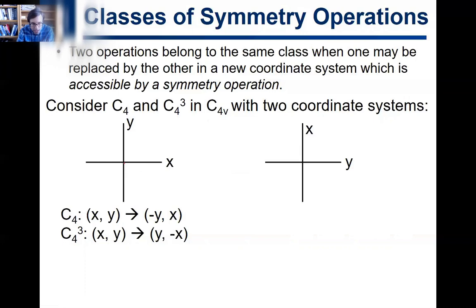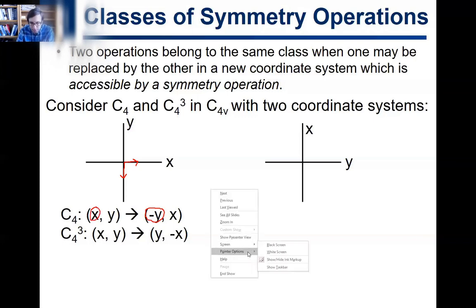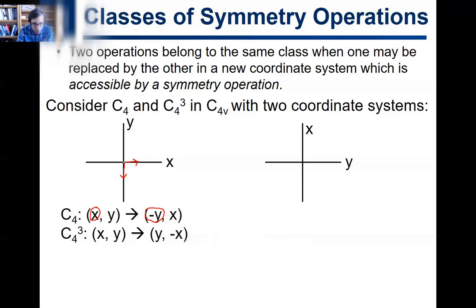To be really clear: the X vector spun 90 degrees goes into negative-Y, and the Y vector spun 90 degrees goes into X. So under C4: X → −Y and Y → X.